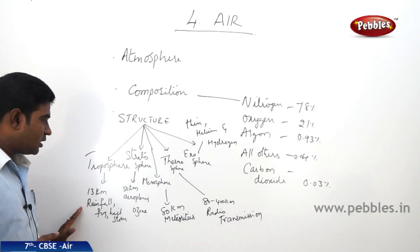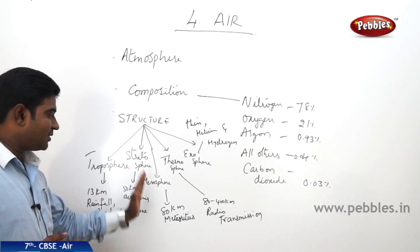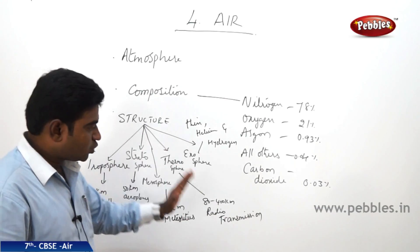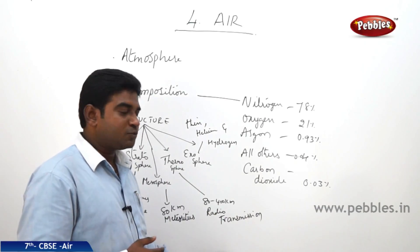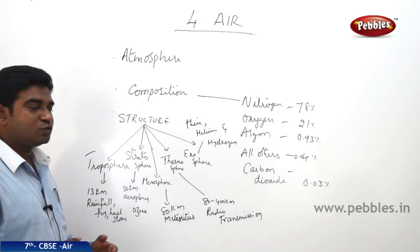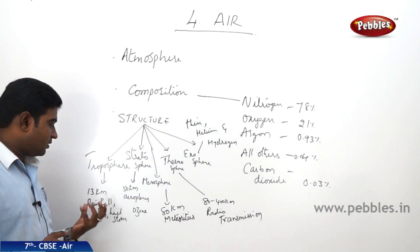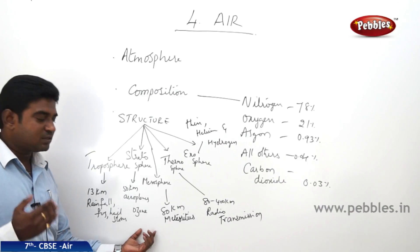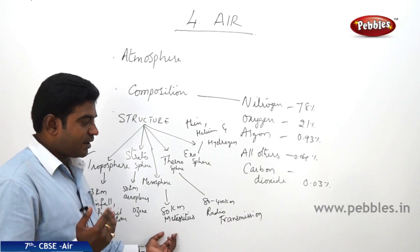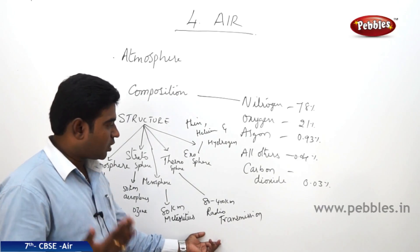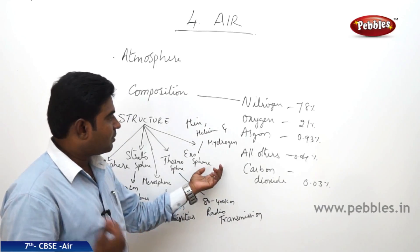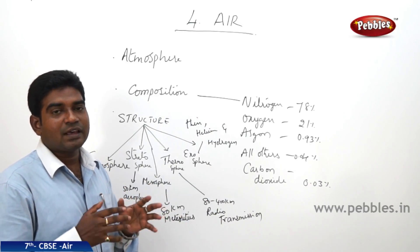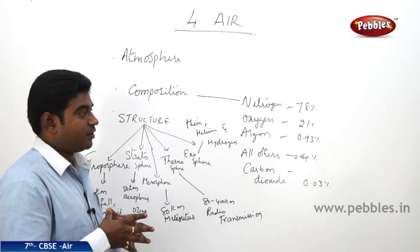The first layer is the troposphere up to 13 kilometers, the second is the stratosphere up to 50 kilometers, the third is the mesosphere up to 80 kilometers, the fourth is the thermosphere from 80 to 400 kilometers, and beyond that we have the exosphere. These are the important layers of the atmosphere.